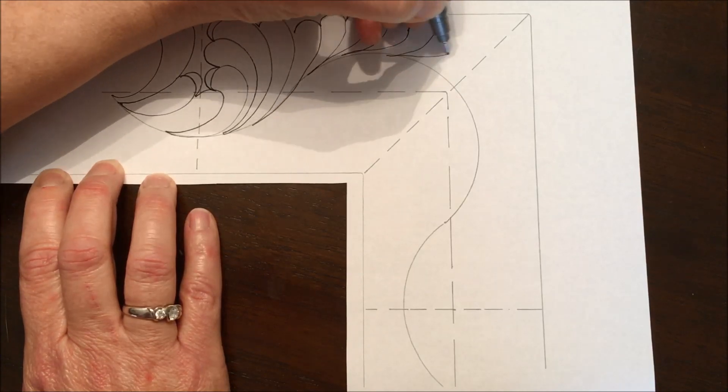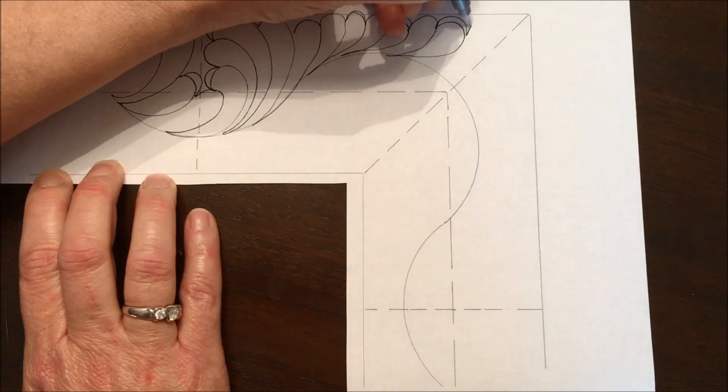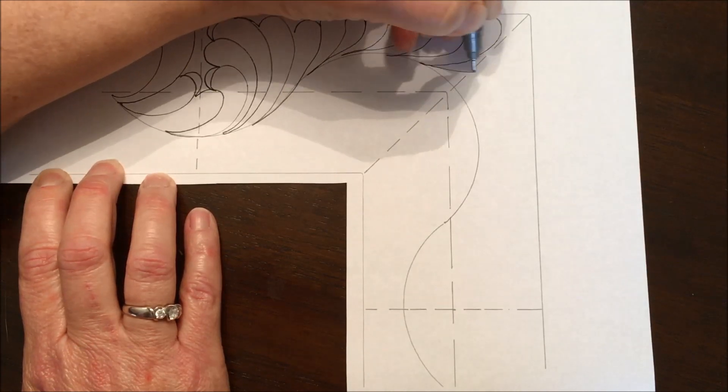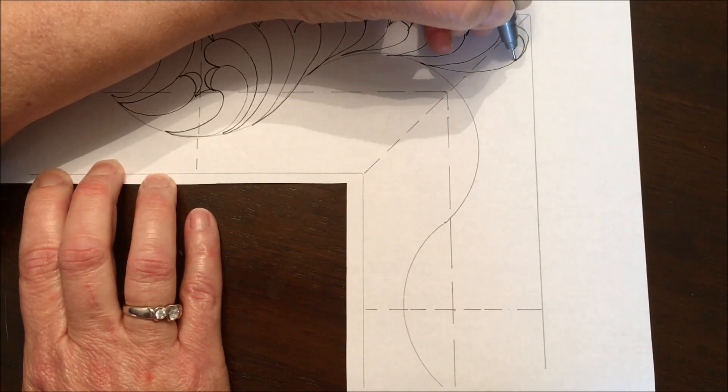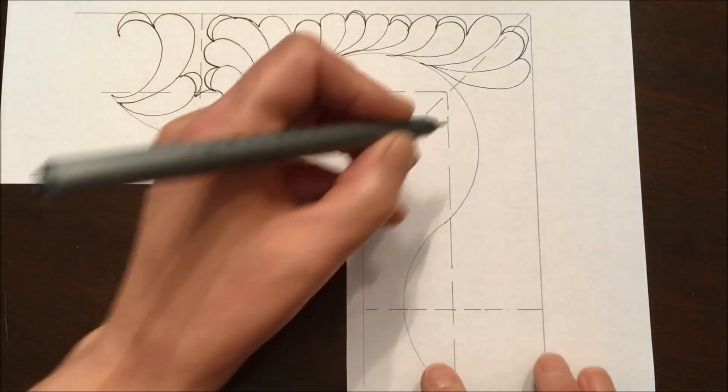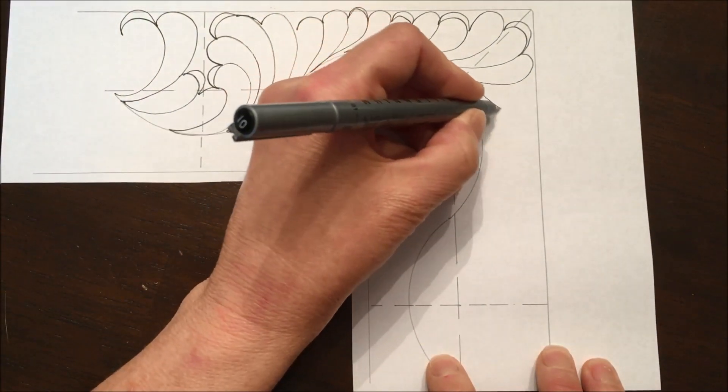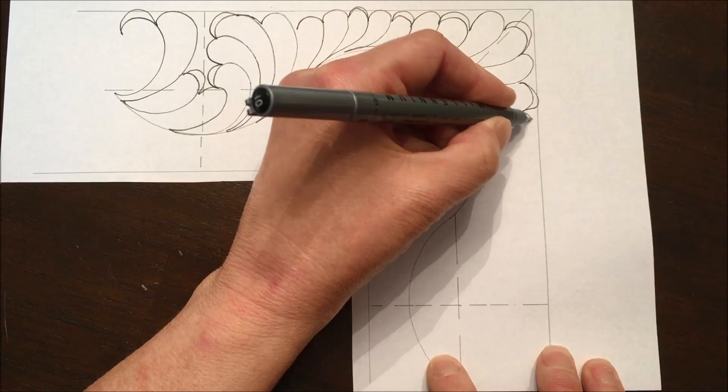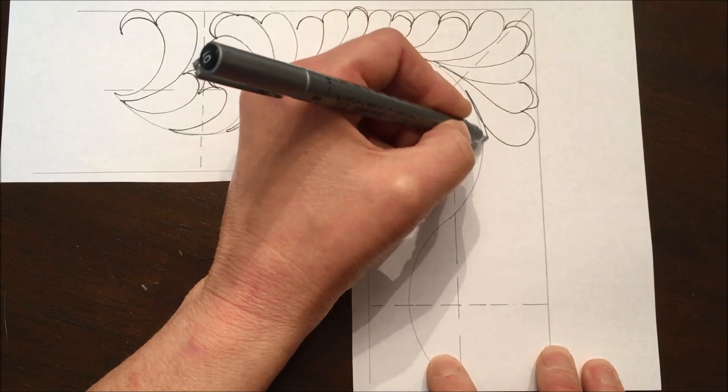I'm going to have to do some reaching here to fill that void of that corner but that's no problem and I can now continue down this piece getting the next portion of this feather drawn in.